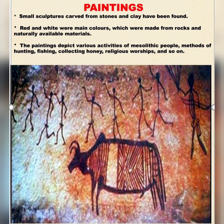Paintings and small sculptures carved from stones and clay have been found. Red and white were the main colors, which were made from rocks and naturally available materials. The paintings depict various activities of Mesolithic people: methods of hunting, fishing, collecting honey, religious worship, and so on.